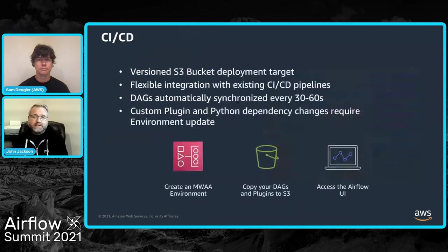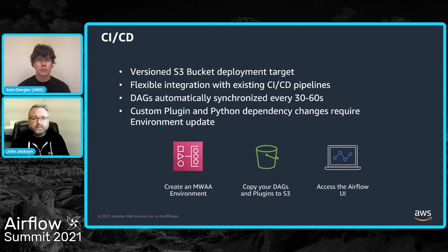All those architecture components are provided for you as part of a managed Airflow environment. The one AWS resource you need to bring is an S3 bucket — a managed object storage service and the first AWS service to go GA. It's a very unopinionated target to store objects of any types and sizes. The only constraints are that it needs versioning turned on — just a checkbox configuration — and public access must be disabled.